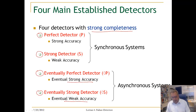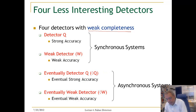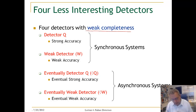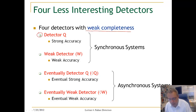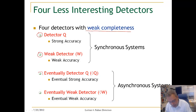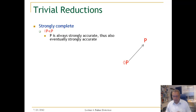Then we have four more failure detectors with weak completeness. To remind you: for each process that crashed, there will exist at least one process that will detect that crash. The four detectors are: detector Q with strong accuracy, detector W with weak accuracy, and then the eventual versions of these two.